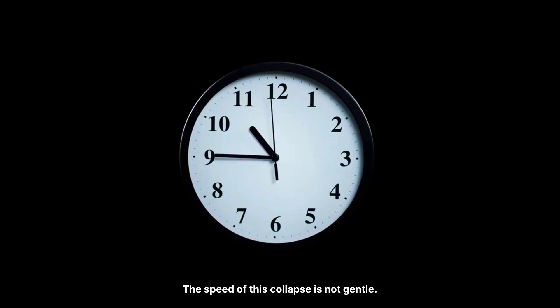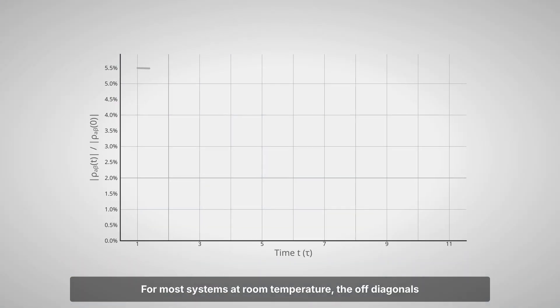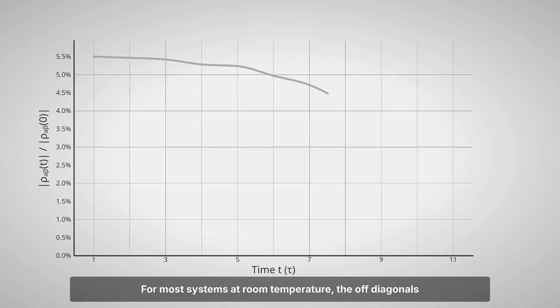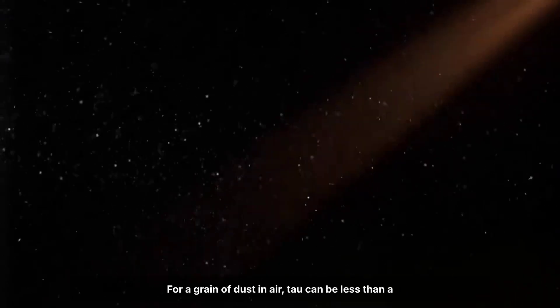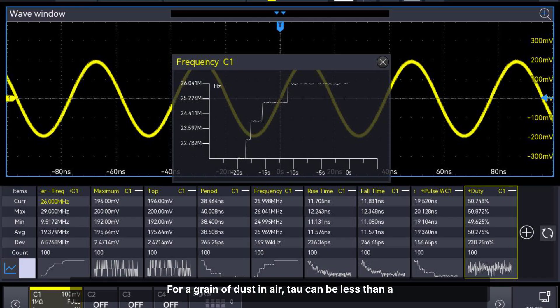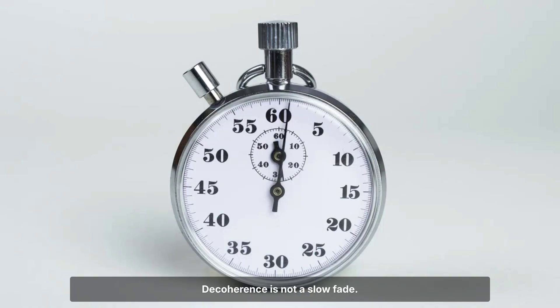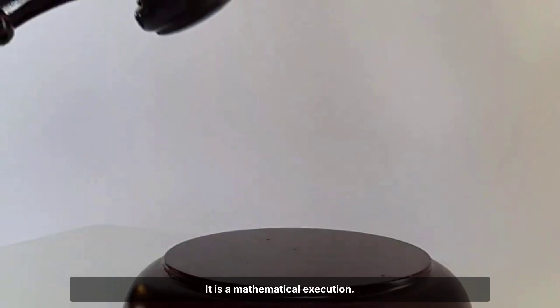The speed of this collapse is not gentle. For most systems at room temperature, the off-diagonals decay exponentially, shrinking as e^(-t/τ), where τ is the coherence time. For a grain of dust in air, τ can be less than a trillionth of a second. Decoherence is not a slow fade. It is a mathematical execution.